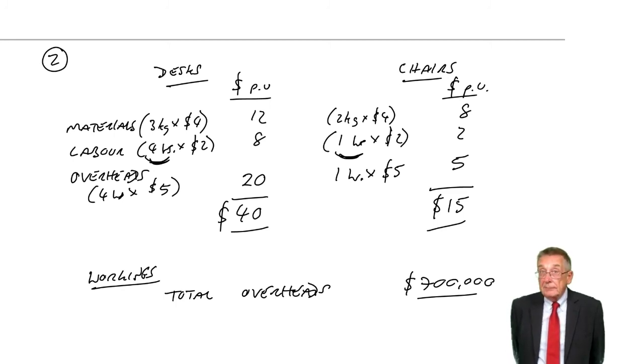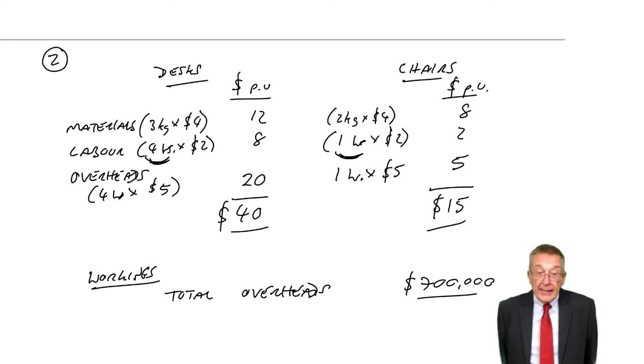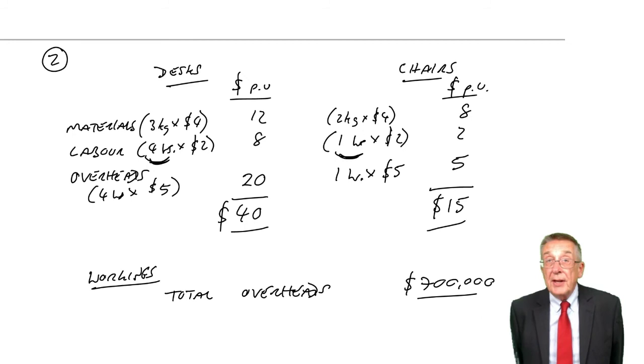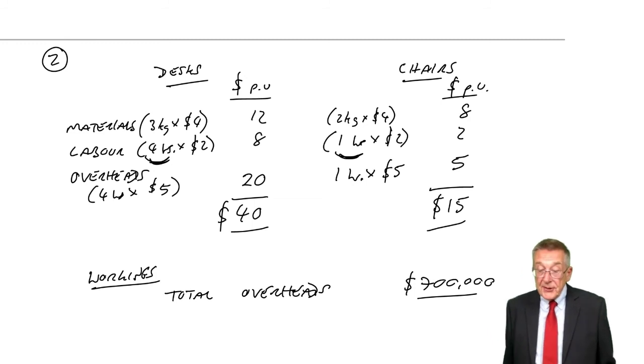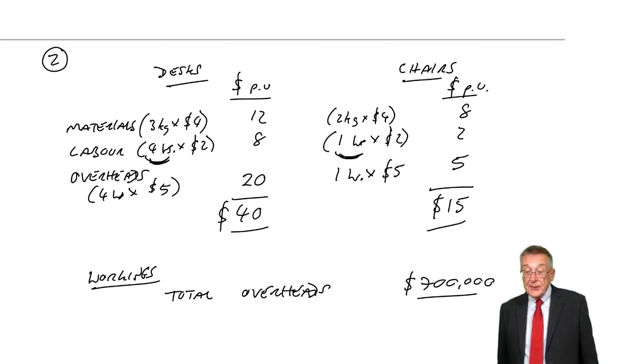Which I think is a lot fairer. In real life you do whatever you think is more sensible, but I do think that's a lot fairer way of dealing with the overheads, that because a desk takes four times as long in the factory, we've ended up giving them four times as much of the overheads.